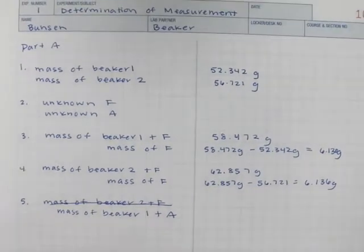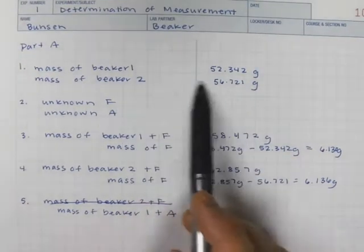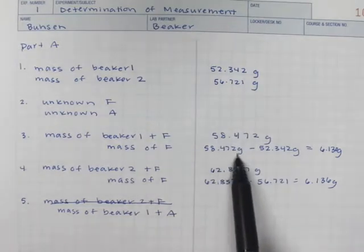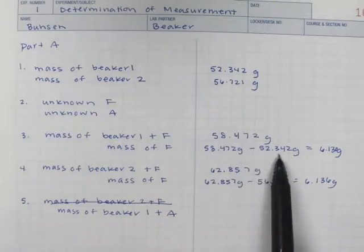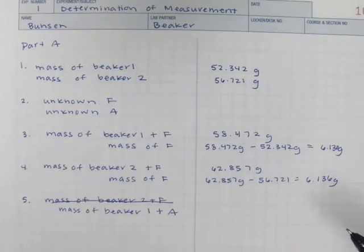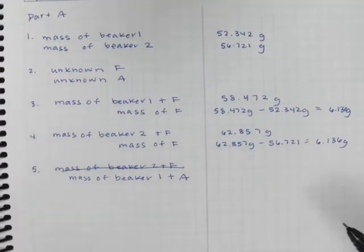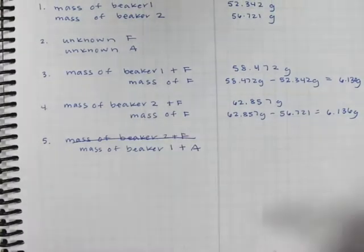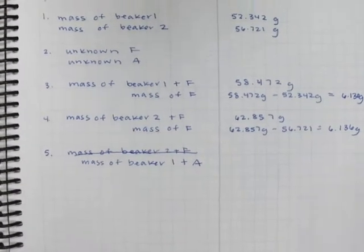So on an experiment like the first one, you'll have different masses, beaker one, beaker two. Sometimes you can do the calculations right here because they're short and it doesn't take a lot of space. If you find that you are saving your calculations till the end of the experiment, if you want, you can just collect all of your data and then have a separate section for calculations.